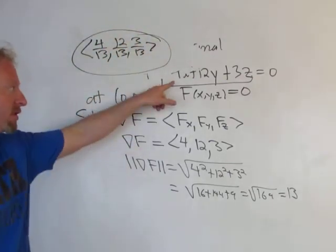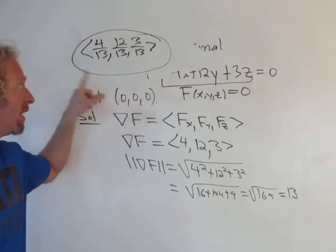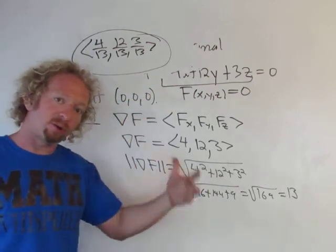And now we have a vector that's normal to the surface at (0, 0, 0), that's a unit vector. So we have a unit normal vector. I hope that made sense.